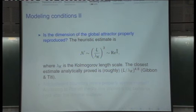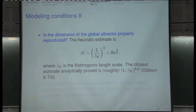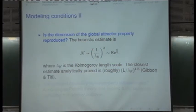More conditions. Is the dimension of the global attractor properly reproduced? That is the heuristic estimate I mentioned this morning. The estimate of the dimension of the proper attractor is Reynolds number to the power of 4.8, instead of the heuristic 1.2. This can be expressed as the rational number 24 over 5.